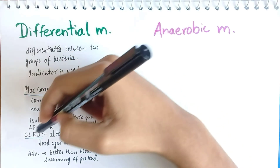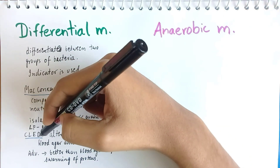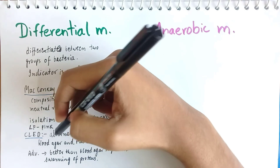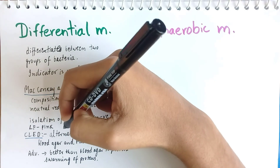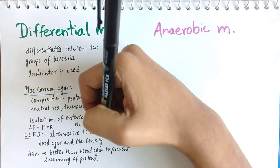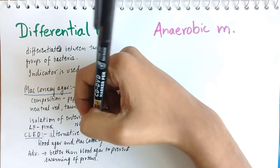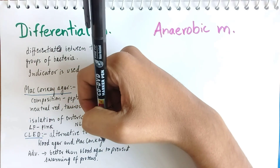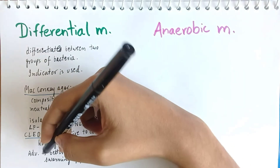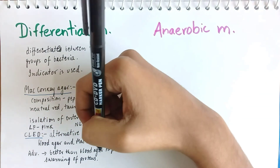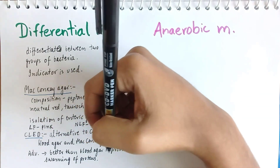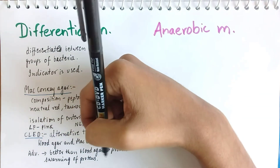Another example is cysteine lactose electrolyte deficient (CLED) agar, which is an alternative to the combination of blood agar and MacConkey agar. Its advantage over blood agar is that it easily prevents the swarming of Proteus.